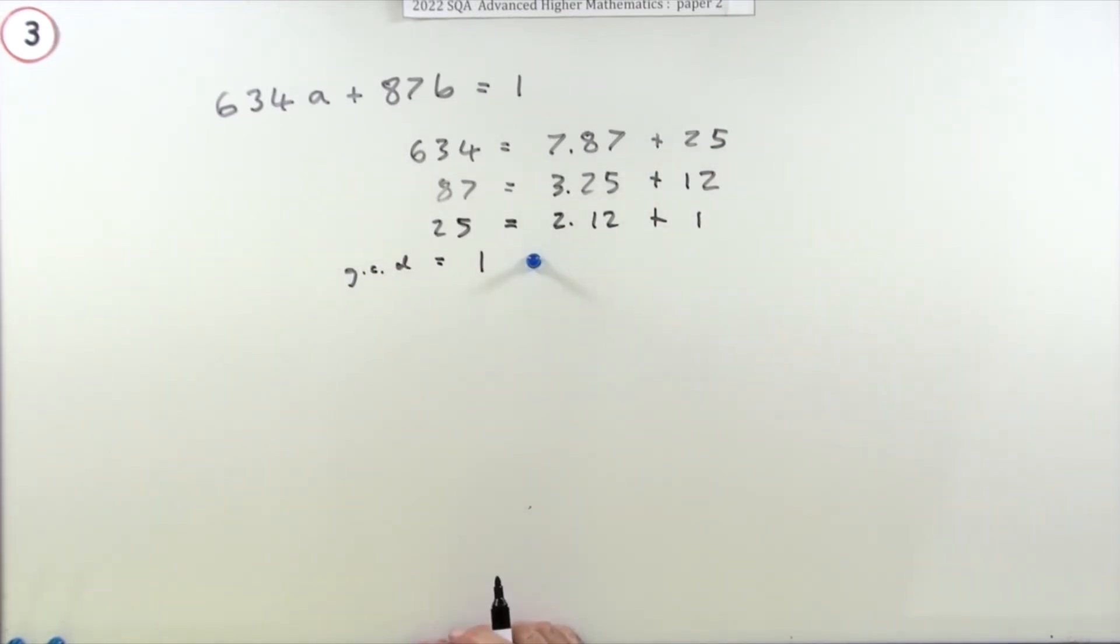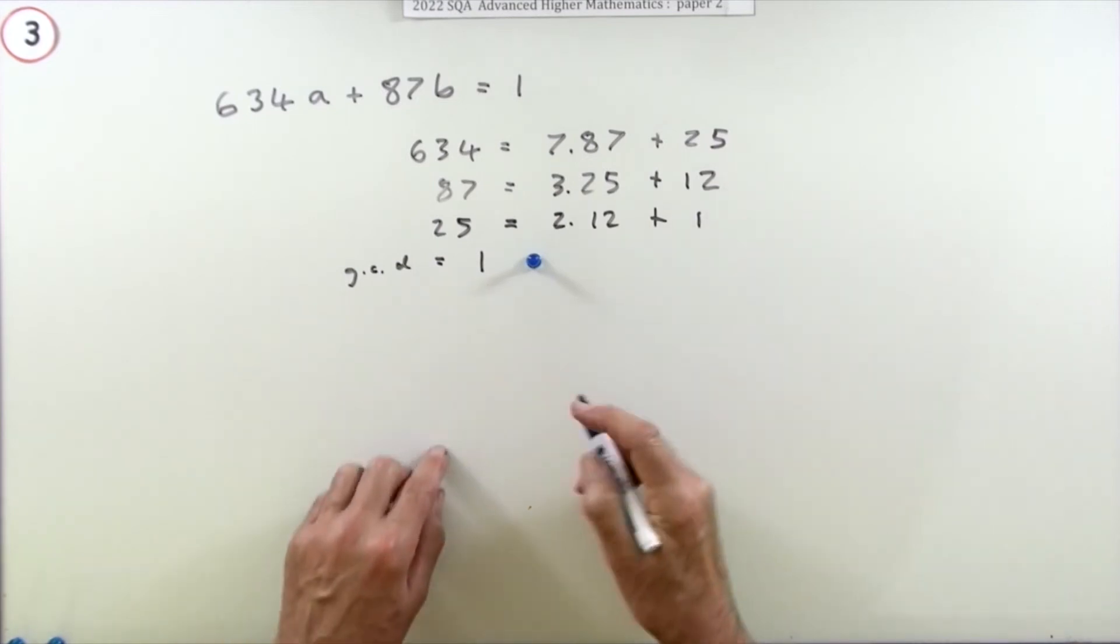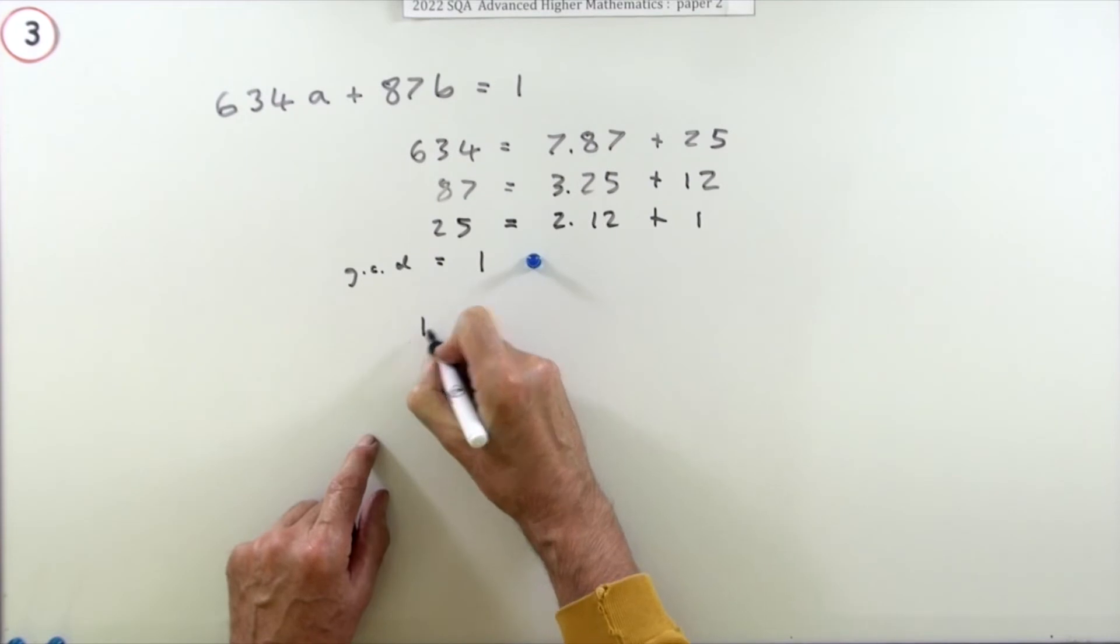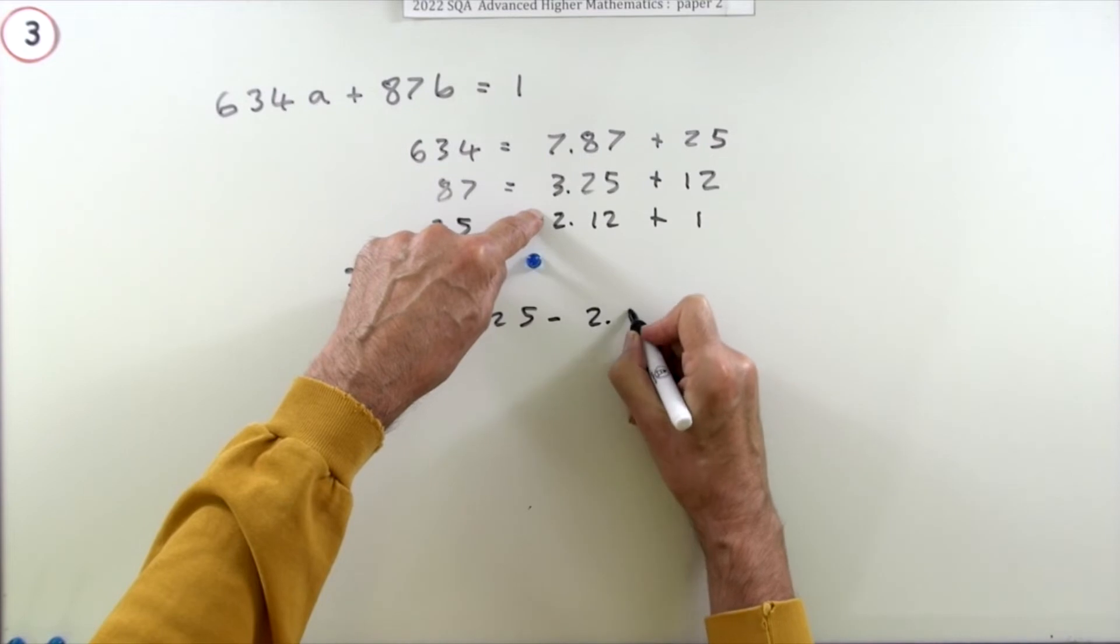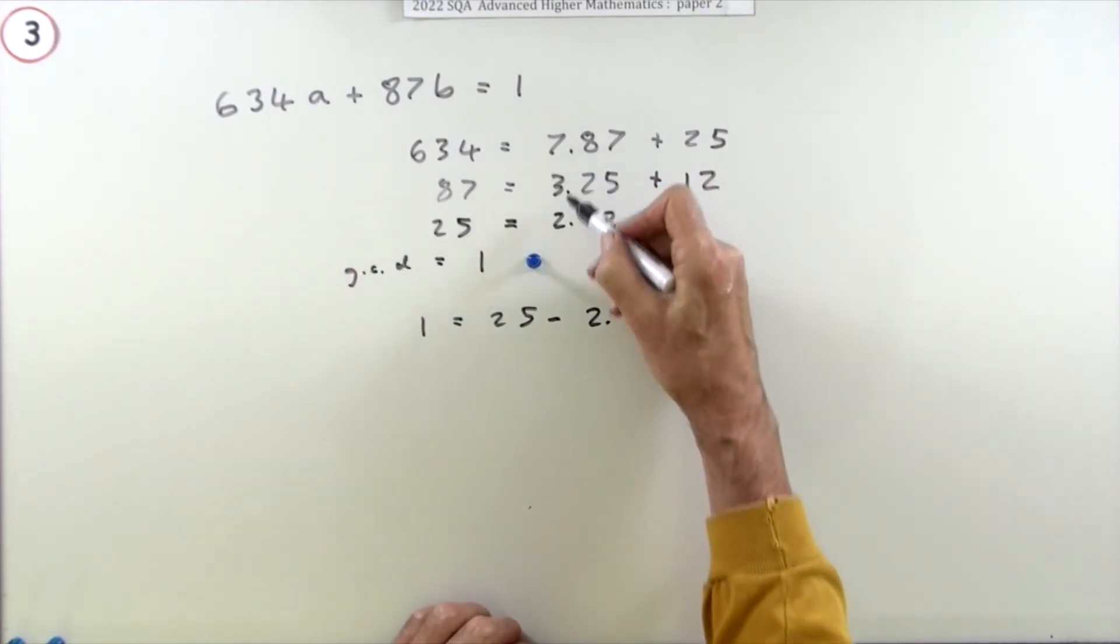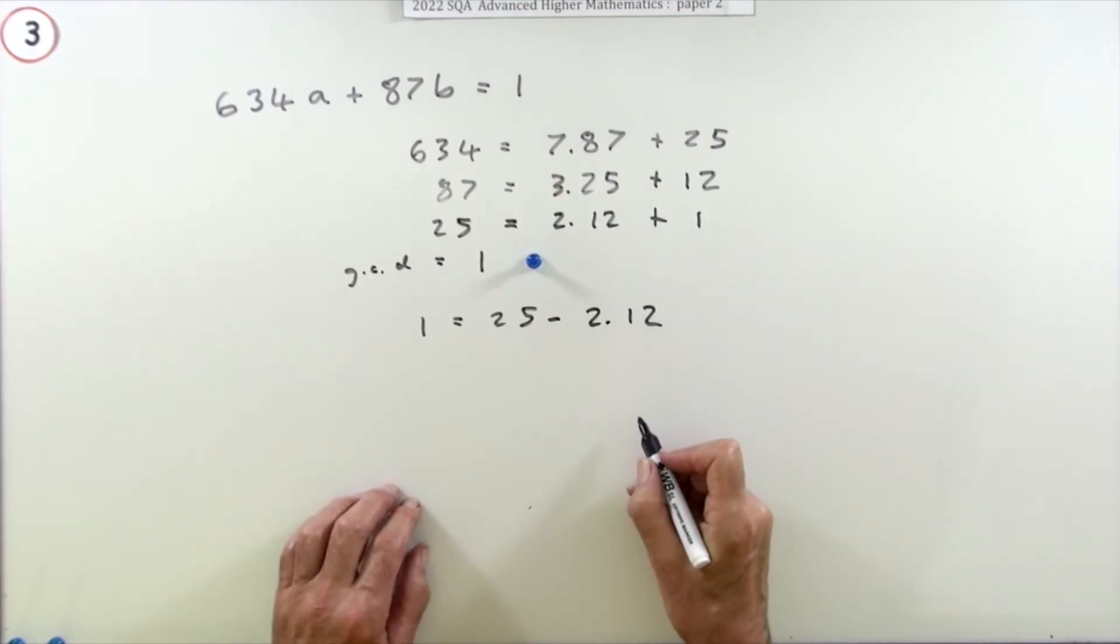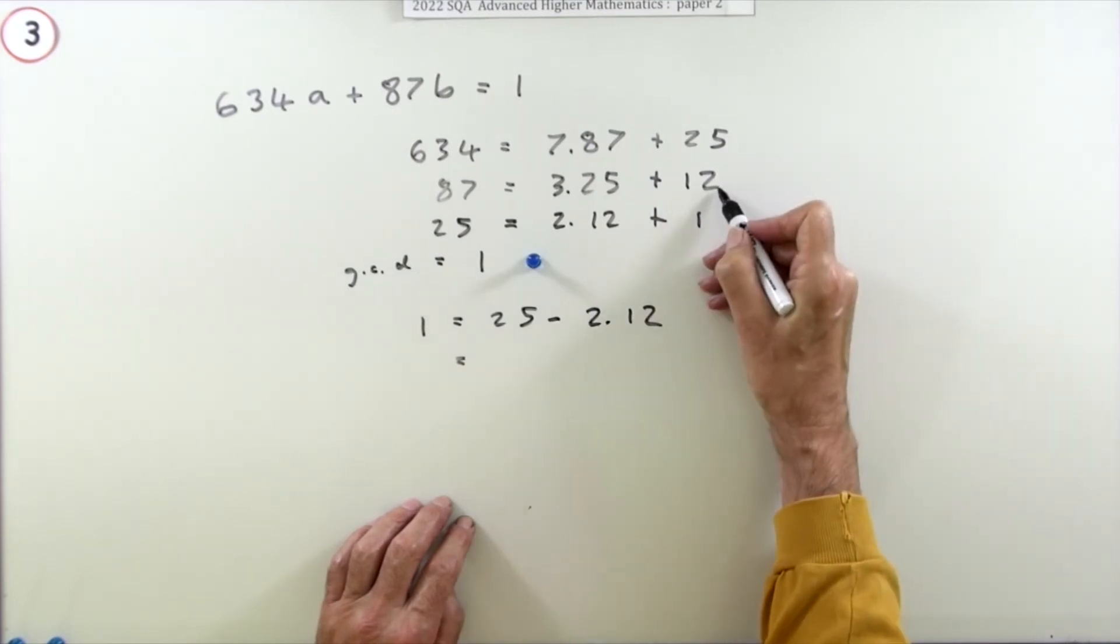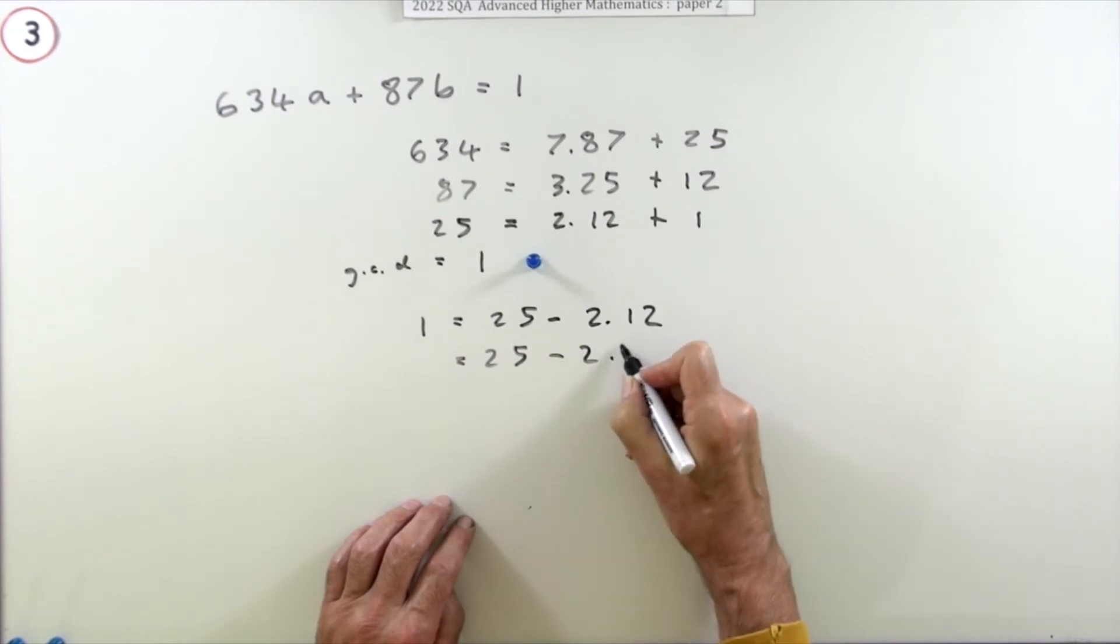Now we've got to work backwards to find a and b. Starting with that one, I'm going to start with this line here. I can rewrite these in the reverse order. Starting with this one, that one equals 25 minus 2 times 12. That's not a decimal point, that's just shorthand for multiplication here, 2 lots of 12.